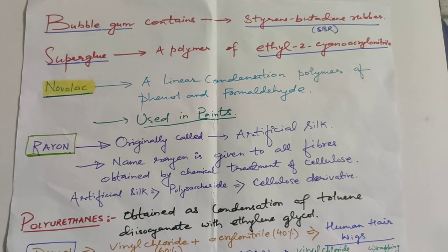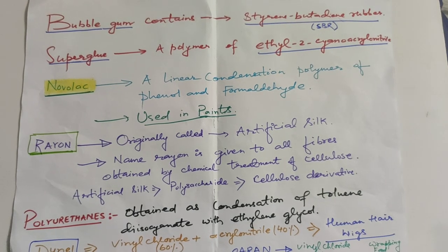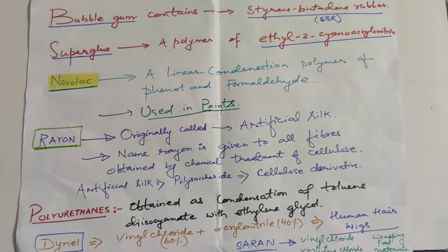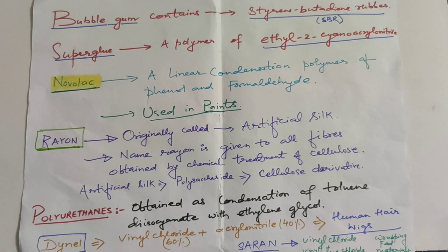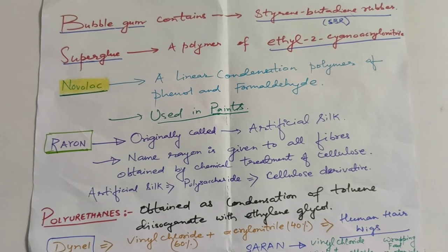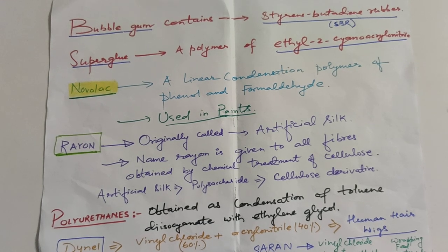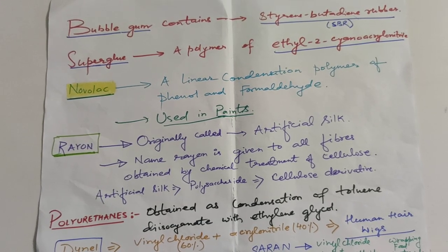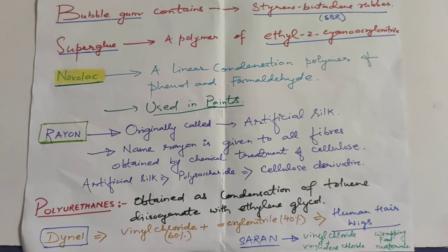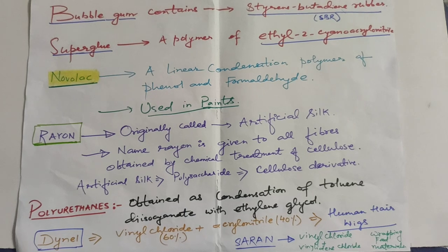Rayon, originally called artificial silk, is the name given to all fibers obtained by chemical treatment of cellulose. It is a polysaccharide made up of cellulose derivatives. Polyurethane is obtained by condensation of toluene diisocyanate with ethylene glycol. Dynel is a polymer formed by 60% vinyl chloride and 40% acrylonitrile, and it is used as human hair wigs.